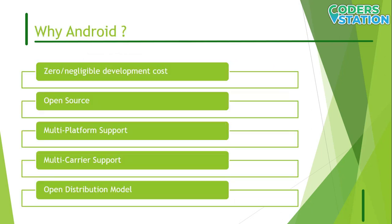Why Android? There are many reasons you should choose the Android platform for mobile application development. The first reason is zero or negligible development cost — tools like Android SDK, JDK, Eclipse IDE, etc. are free to download. The second reason is that Android OS is an open source platform based on the Linux kernel and multiple open source libraries, so developers are free to contribute or extend the platform as necessary.